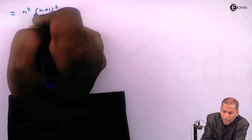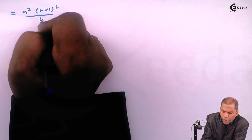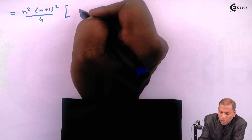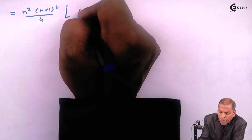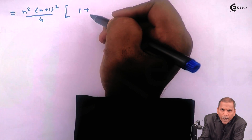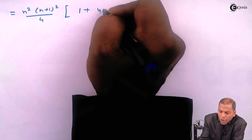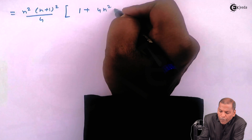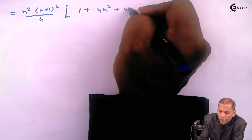Now inside the bracket we cross-multiply: the 2 in the denominator with 8 gives 4. So the next step is: n²(n+1)²/4 multiplied by [1 + 4n(n+1)], which expands inside the bracket to 1 + 4n² + 4n.